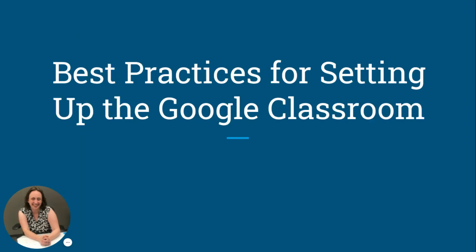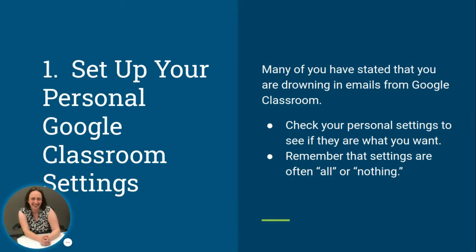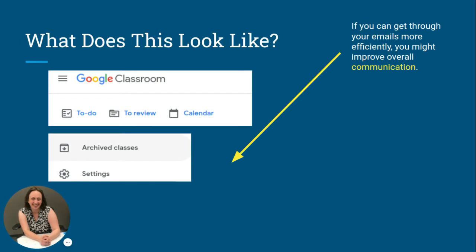Best practices for setting up Google Classroom. First: set up your personal Google Classroom settings. A lot of you stated you were drowning in emails from Google Classroom — you were getting a notification for everything. This was especially true for ESS teachers in multiple classrooms. You can check your personal settings. Remember it tends to be an all-or-nothing thing — you can't set it for certain students, only all or nothing for a class. Scroll to the bottom of the classroom where you'll see settings, and set your notifications to what you want.